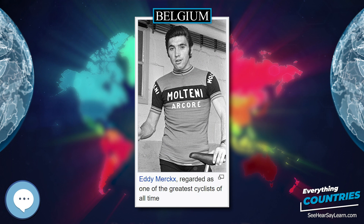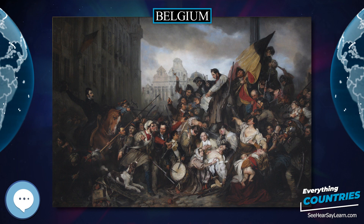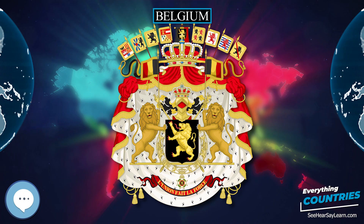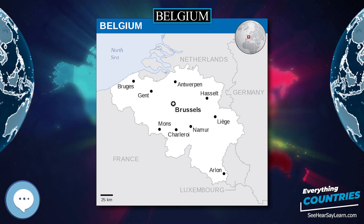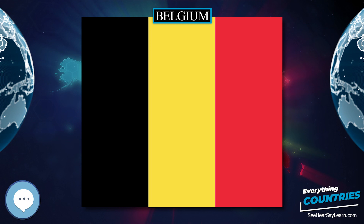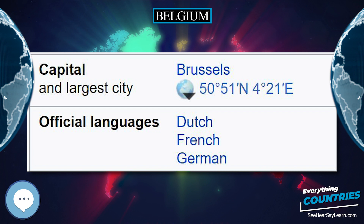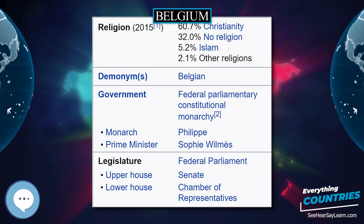Belgium has three main geographical regions: the coastal plain in the northwest and the central plateau belong to the Anglo-Belgian basin, and the Ardennes uplands in the southeast belong to the Hercynian Orogenic Belt. The coastal plain consists mainly of sand dunes and polders. Further inland lies a smooth, slowly rising landscape irrigated by numerous waterways, with fertile valleys and the northeastern sandy plain of the Campine. The thickly forested hills and plateaus of the Ardennes are more rugged and rocky. The Signal de Botrange forms the country's highest point at 694 meters.